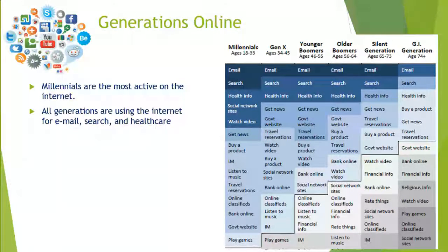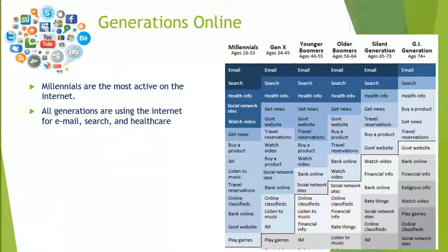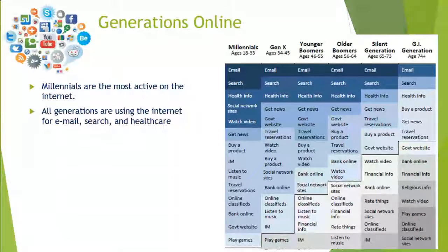The chart shows that the darker the blue, the higher the percentage of time spent. For example, 90 to 100 percent of all people in most generations use the Internet to check their email. Most people also use the Internet to search and to get health information. Then it starts to change — millennials are spending more time visiting social networking sites or watching videos, whereas a bigger percentage of Generation X and boomers are spending their time getting the news, visiting government websites, making travel reservations, and so on.